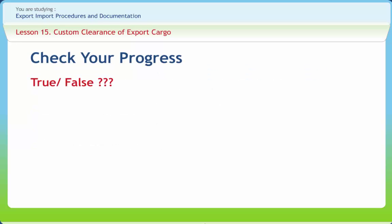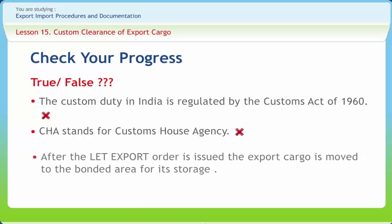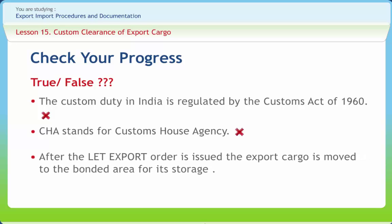Let us check our progress. The custom duty in India is regulated by the Customs Act of 1960 — right or wrong? Wrong. CHA stands for Customs House Agency — right or wrong? Wrong. After the let export order is issued, the export cargo is moved to the bonded area for its storage — right or wrong? Wrong.